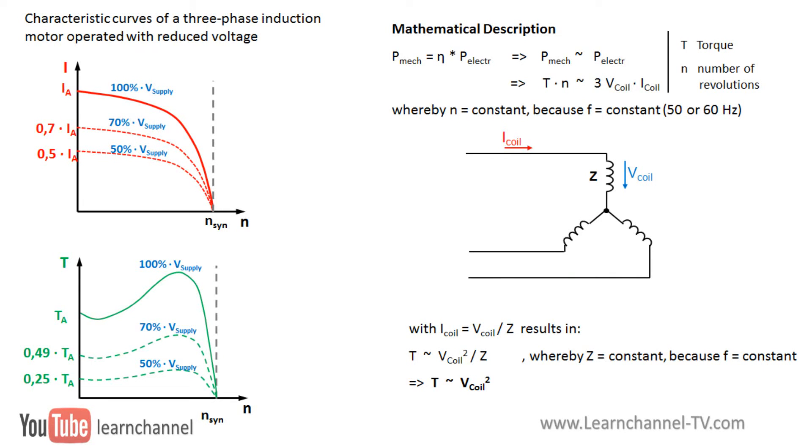By reducing the supply voltage, the force of the RMF gets lower and therefore also the force of the magnetic field of the rotor bars. This might lead to another problem. As soon as the voltage is reduced, the torque decreases to a square. So check if the starting torque is still sufficient.